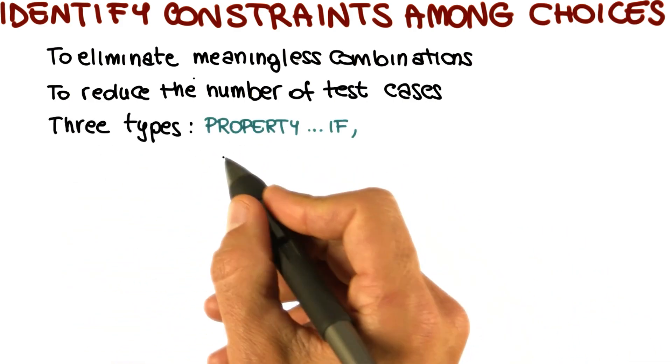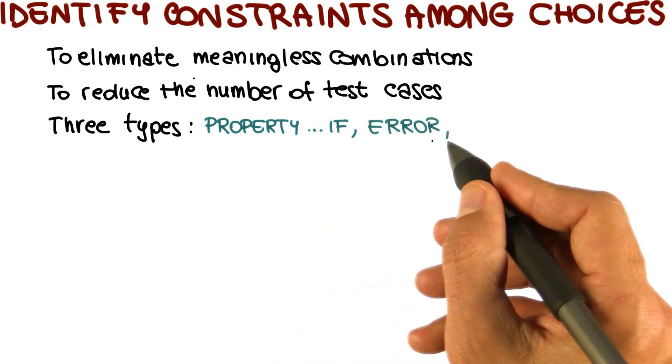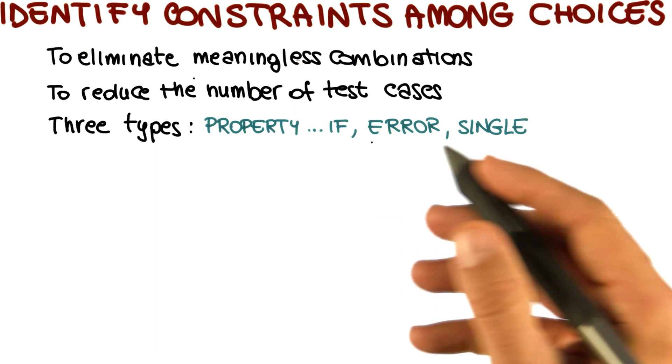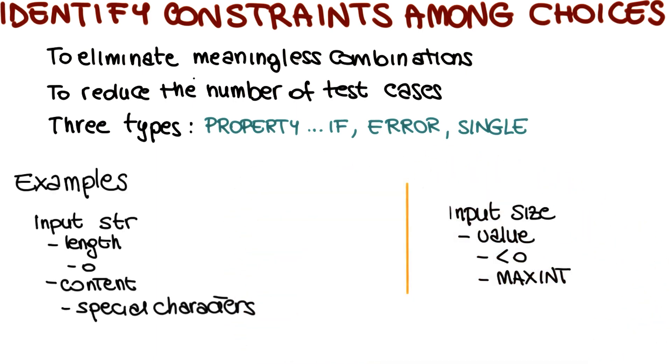There are three types of properties: the property if, error properties, and properties of type single. We're going to look at what these properties mean using, once more, our example of the split program. In particular, we're going to use some of the choices we identified earlier.